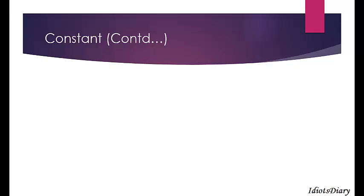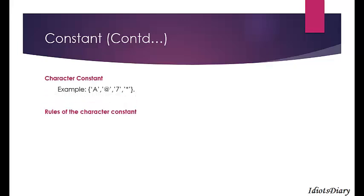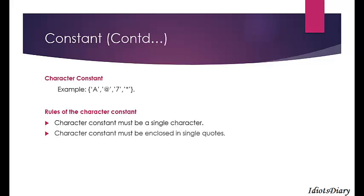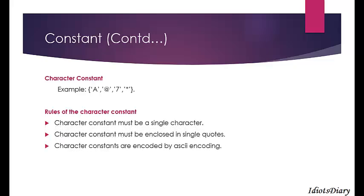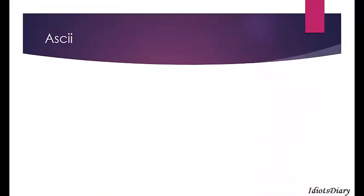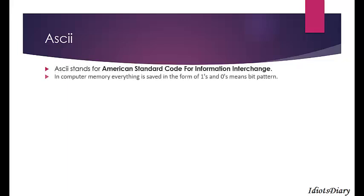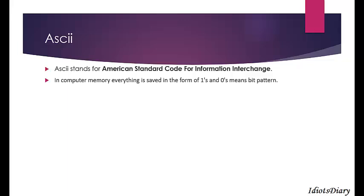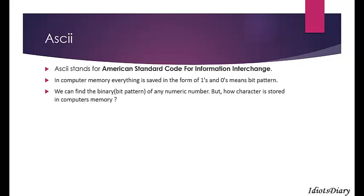The next type of scalar constants are character constants. All characters available on the keyboard can be a character constant — for example, 'a', '7', '*', and many more. Rules: a character constant must be a single character and must be enclosed in single quotes. Each character constant is encoded by ASCII. ASCII stands for American Standard Code for Information Interchange. Everything in a computer is saved as combinations of 0s and 1s. Numbers can be converted to bit patterns, but characters cannot directly, so each character has a number associated with it, known as its ASCII value.